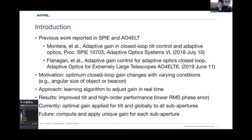The optimum closed loop gain changes with varying conditions. Our approach to solving this is a learning algorithm that adjusts the gain in real time. We've shown improved tilt and higher performance by looking at the RMS phase error as reported by the wavefront sensor. We've currently implemented this for tilt, and we've been using that for about three years now.